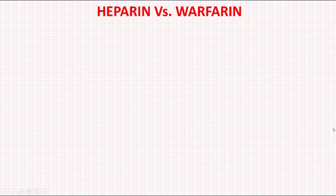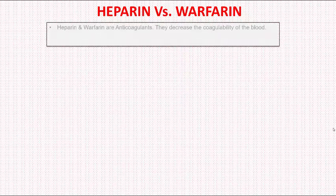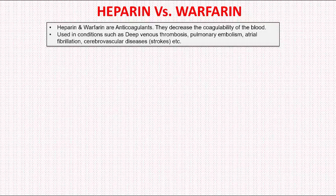Hi, today we will have a look at the basic differences between heparin and warfarin and some tricks to easily remember them. Heparin and warfarin are anticoagulant drugs, which means that they decrease the clotting of blood. They are used in conditions such as deep venous thrombosis, pulmonary embolism, atrial fibrillation, cerebrovascular diseases, etc. An important point: anticoagulants such as heparin and warfarin prevent the formation and extension of thrombus. However, they do not dissolve an already formed clot.